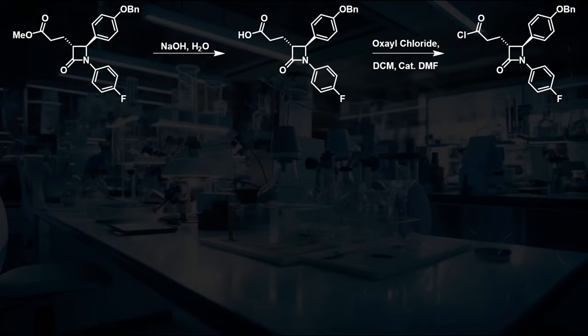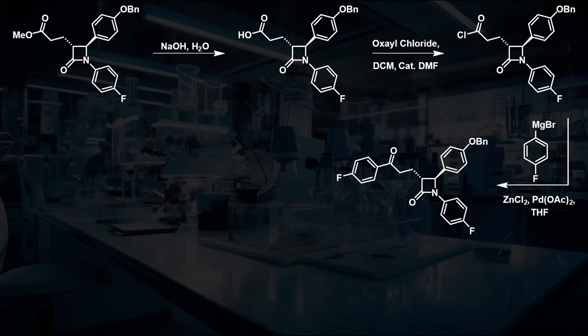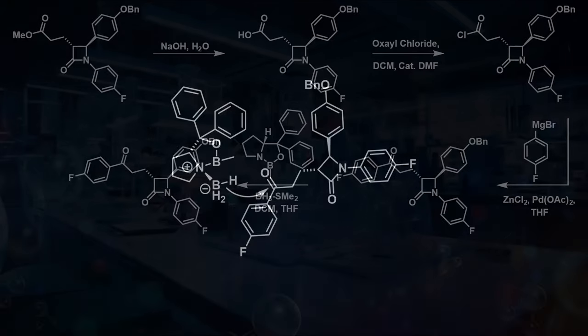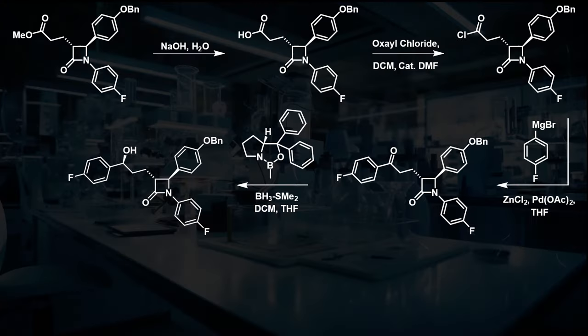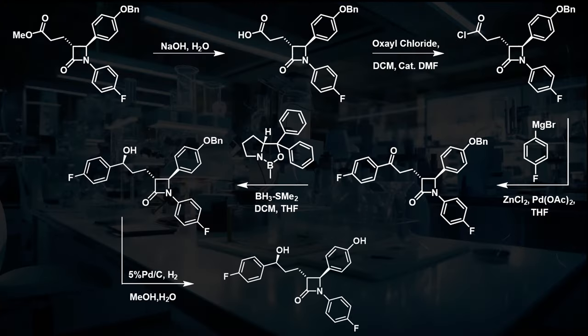This acid chloride is reacted in a Negishi coupling forming the substituted ketone, which can be stereoselectively reduced using a CBS reduction. In this reaction, the chiral oxazaborolidine controls which face of the ketone the hydride is delivered to. The final step in the synthesis is the removal of the benzyl protecting group using hydrogen and a palladium on charcoal catalyst, revealing the free phenol.